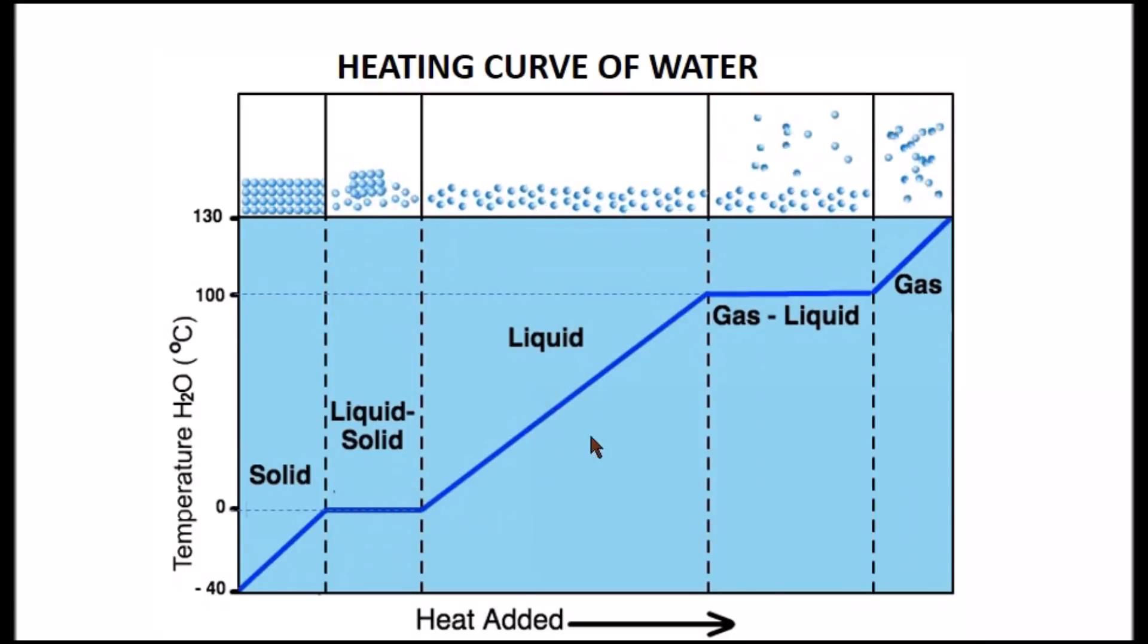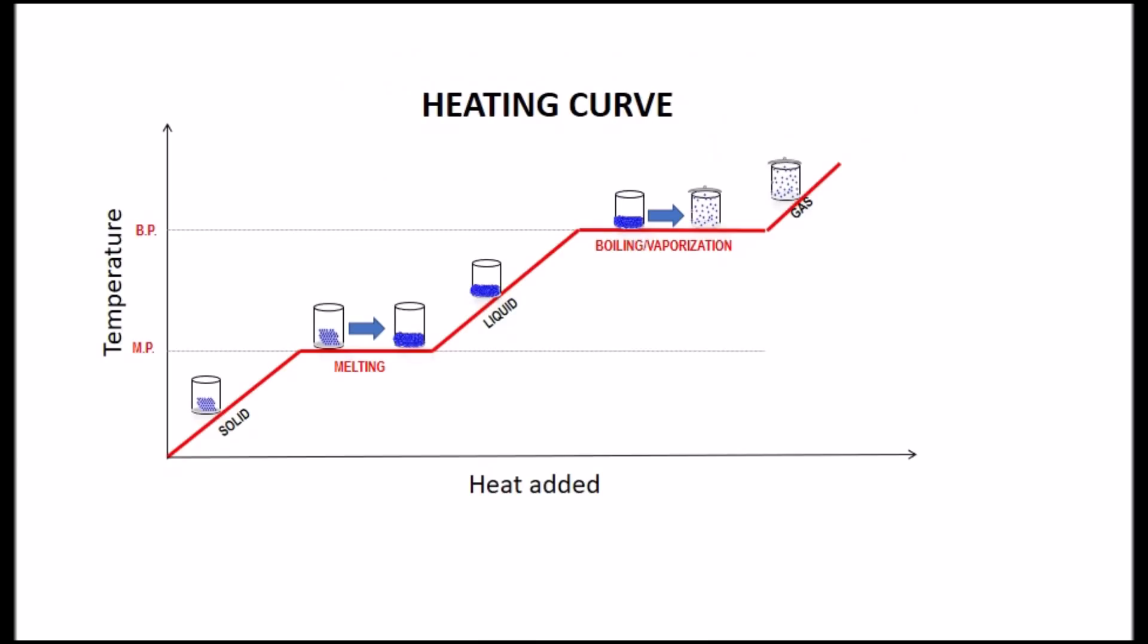Every single substance that we can observe is going to have the same shape of the curve. The only thing that is going to differ is the values of the melting and boiling point. The heating curve for any other pure substance will look very similar as the one that we did for water. The only difference is that we will have different values in the flat zones for the melting point and the boiling point.